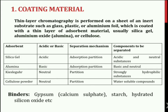In silica gel G, the G indicates the presence of gypsum. The following table contains names and properties of various adsorbents used. For example, silica gel is acidic in nature and is used for the separation of acidic and neutral components, while alumina is neutral and is used for the separation of water-soluble compounds.